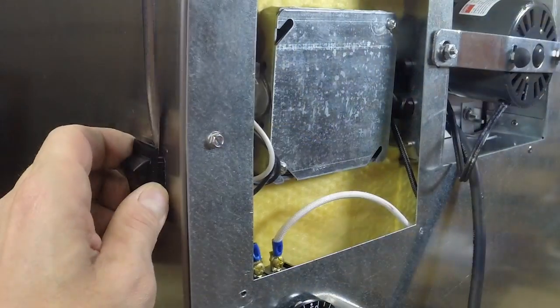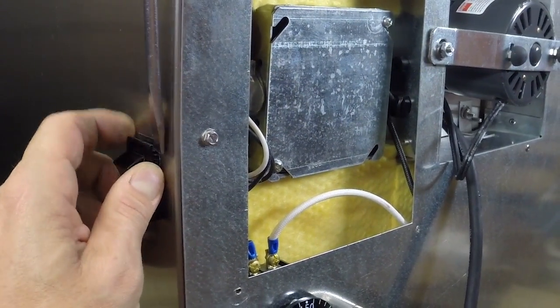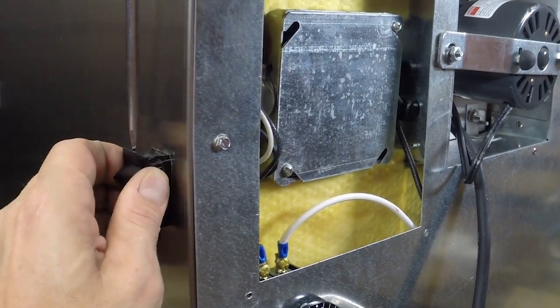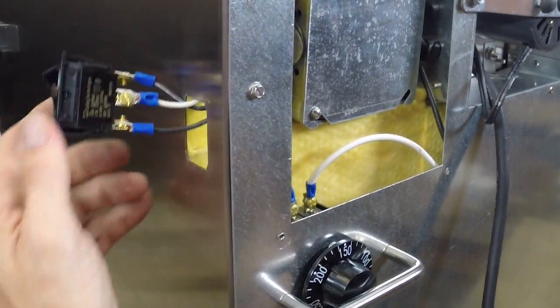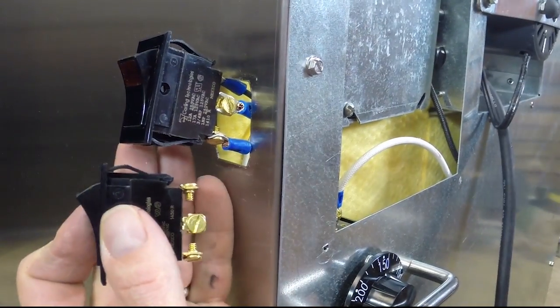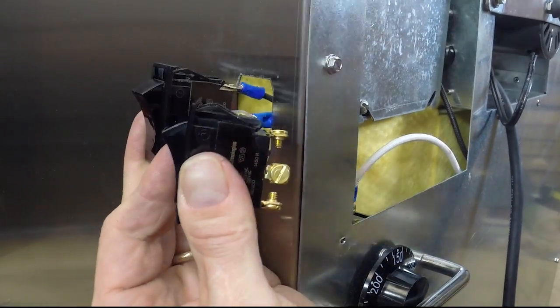Use the screwdriver to pry the rocker switch from the warmer. Pull the switch far enough that the wires have cleared the hole. It is very important to reconnect these three wires in the exact same position on the new switch to avoid a short.